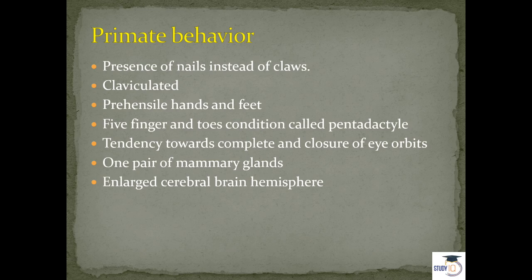Let's start with primate behavior. Under primates we consider what was their behavior, how were their body and mental functions. First: presence of nails instead of claws — their hands and legs have nails, not claws. Next is the presence of the clavicle bone, the collar bone which we can feel by touch. Presence of clavicle bone is one of the behavioral aspects of primates.